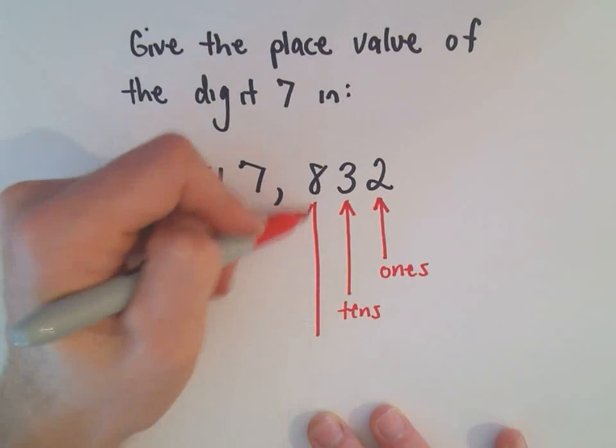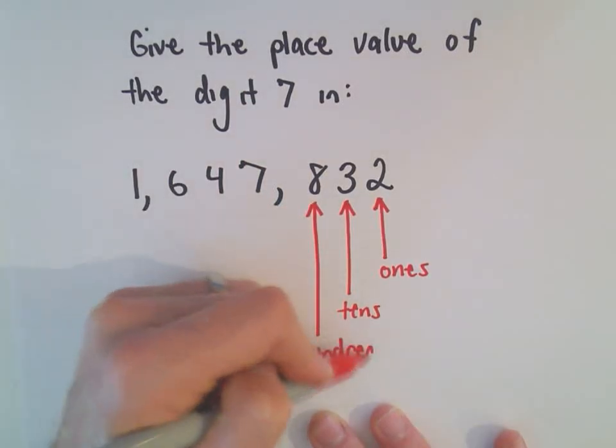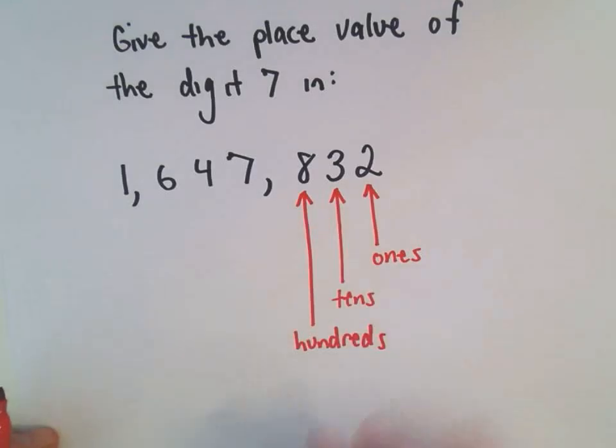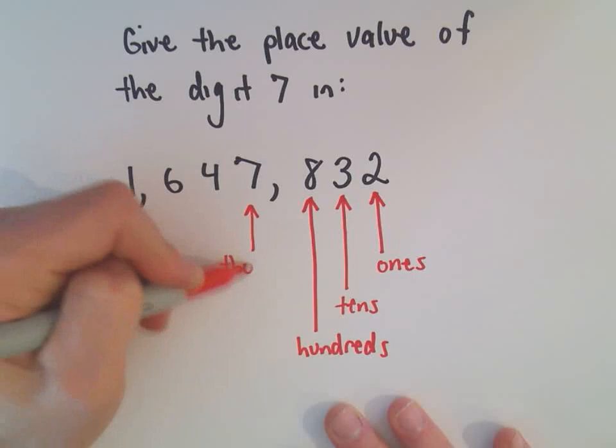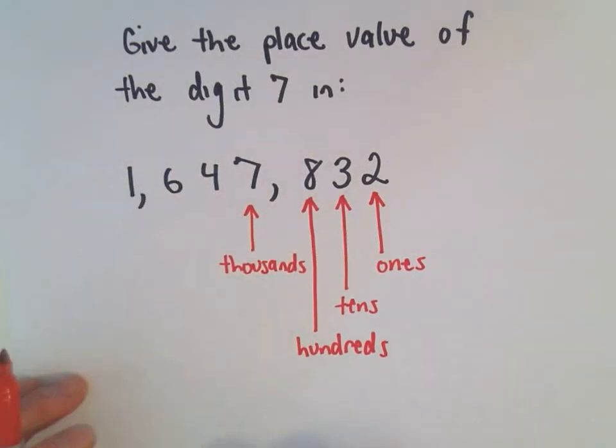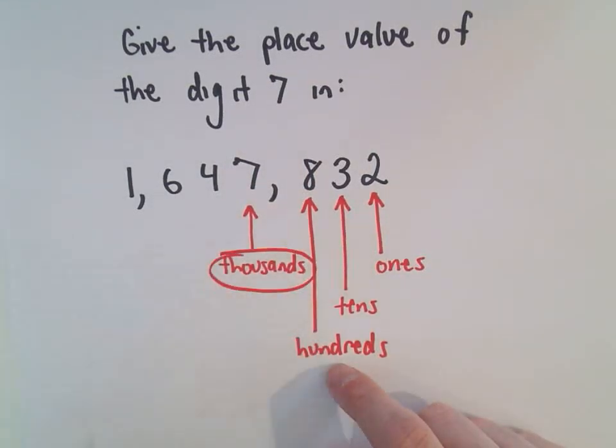And then our next number, the 8, that occupies the 100's. So, if we keep moving along here, after hundreds, we have thousands. And that's actually kind of the answer to the question. If somebody said, what's the place value of the digit 7? We would say, well, 7 is in the thousands place.